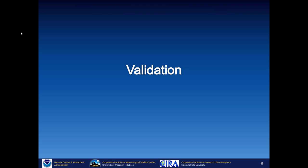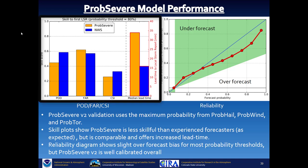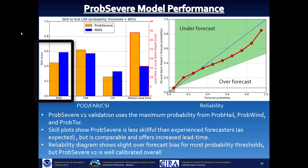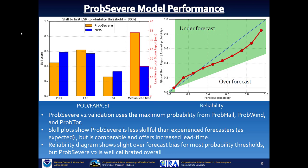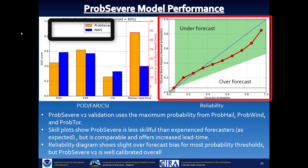How well do these products perform statistically? The chart on the left compares PROB SEVERE with National Weather Service forecasters. Probability of detection, false alarm rate, and critical success index are fairly similar for both. What PROB SEVERE provides is better lead time — this is why it can increase your confidence in issuing a warning. The reliability diagram on the right shows a slight over-forecast bias for most probability thresholds, but PROB SEVERE is well calibrated overall.